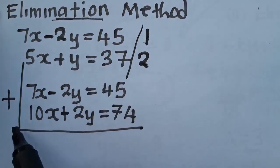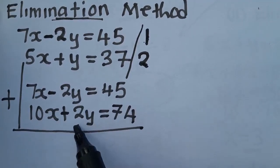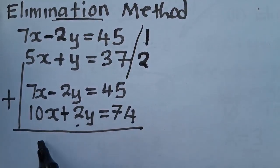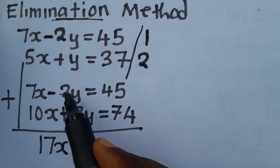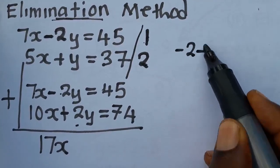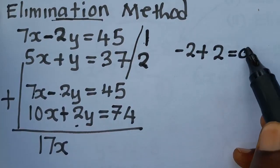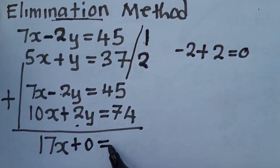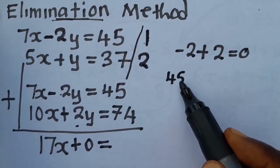We are going to add. What is 7x plus 10x? We get 17x. What is negative 2? That is a negative 2 plus what? Plus 2. You get definitely it is a 0. You say plus what? 0.